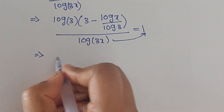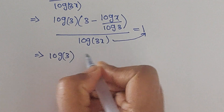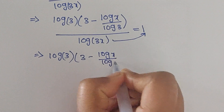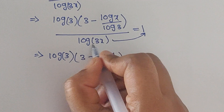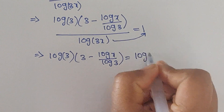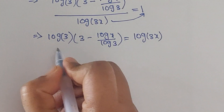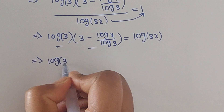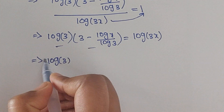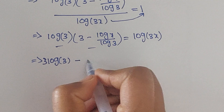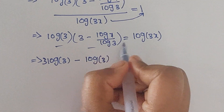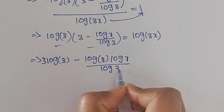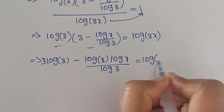Now move this term to the right side and multiply these two terms. Log 3 times 3 minus log 3 times log x divided by log 3. So log x divided by log 3 equals log 3x.